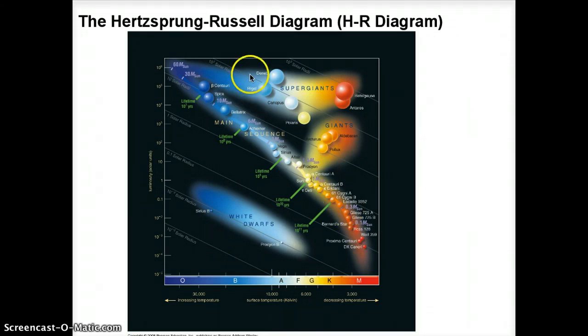Then in the upper right, we have a section up here that's going to be called supergiants and another region here called red giants. These are obviously going to be big stars. The supergiants are really, really big stars. And then finally, there's another diagonal line down here that is the white dwarfs.